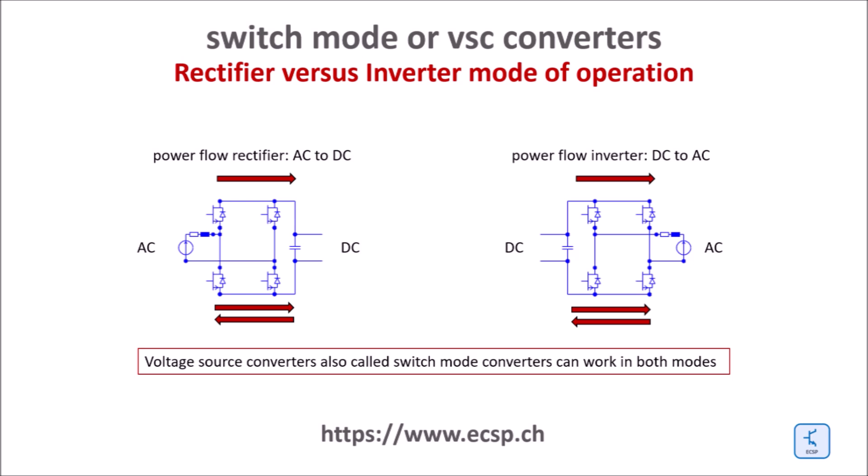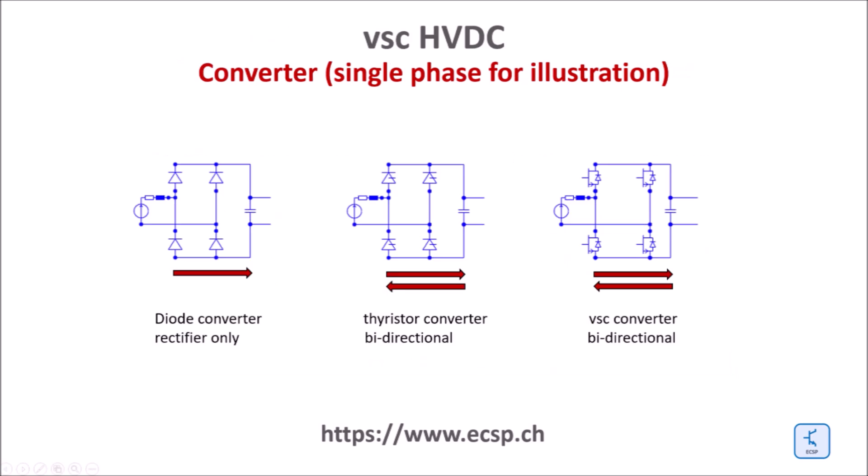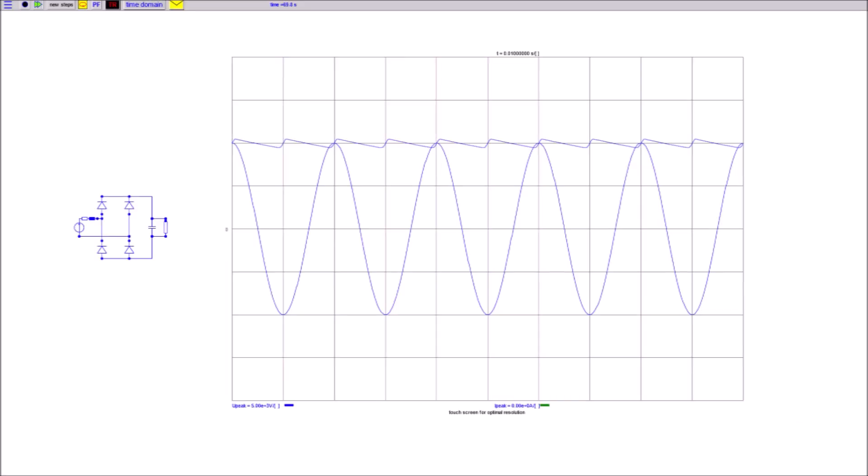Note that switch mode converters can work in both directions — in rectifier as well as in inverter mode. There are three basic families of converters: diode converters work as rectifiers only. Thyristor converters and voltage source converters or switch mode converters can be operated as controlled rectifiers or controlled inverters. Thyristor converters have been explained in great detail in the video about conventional HVDC.